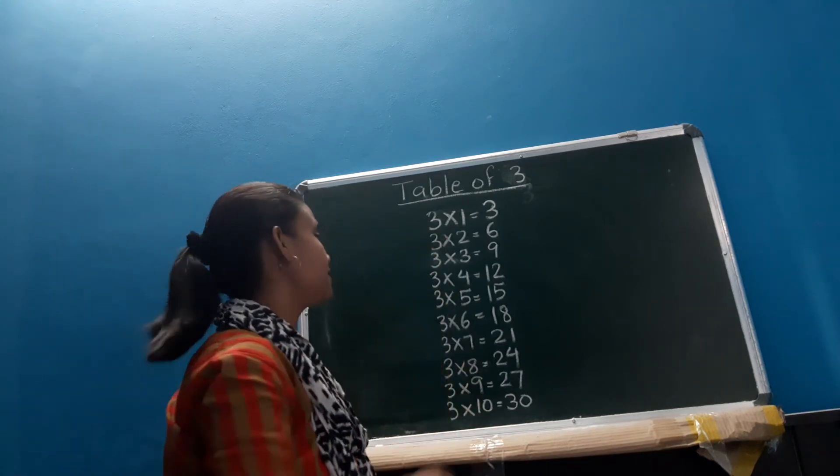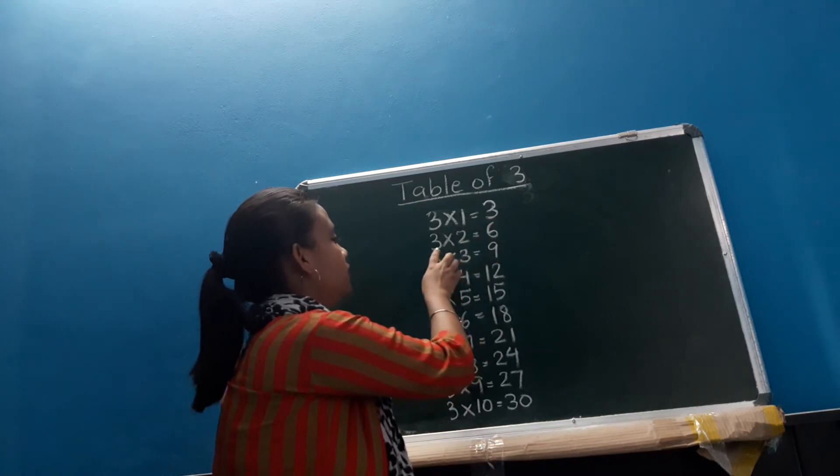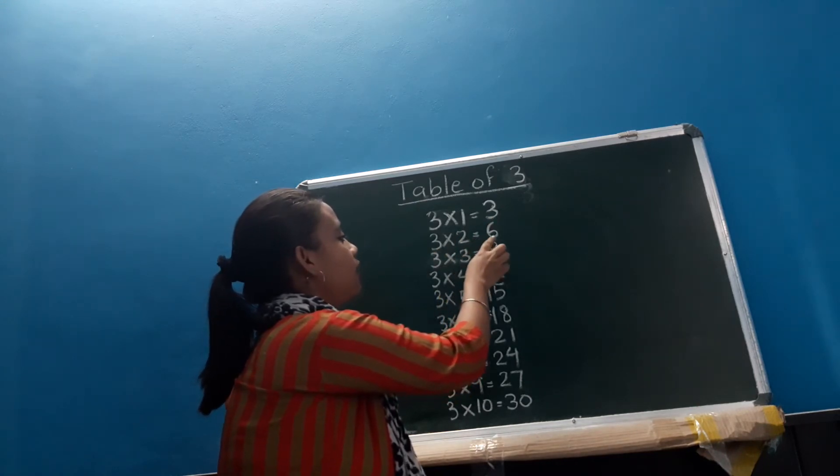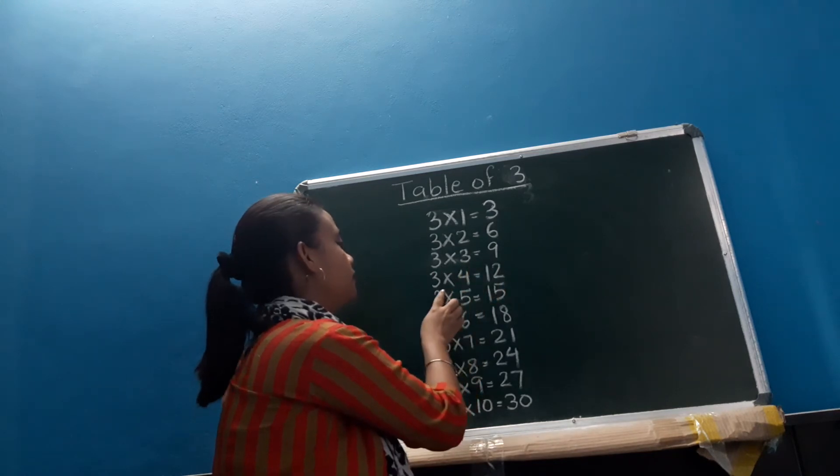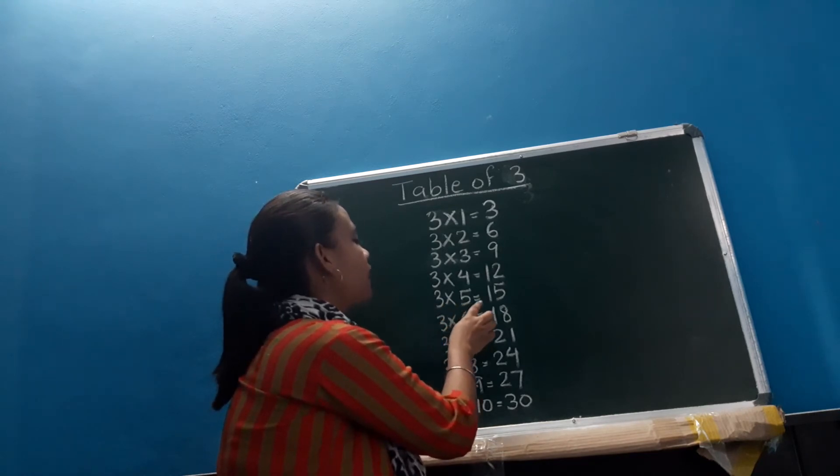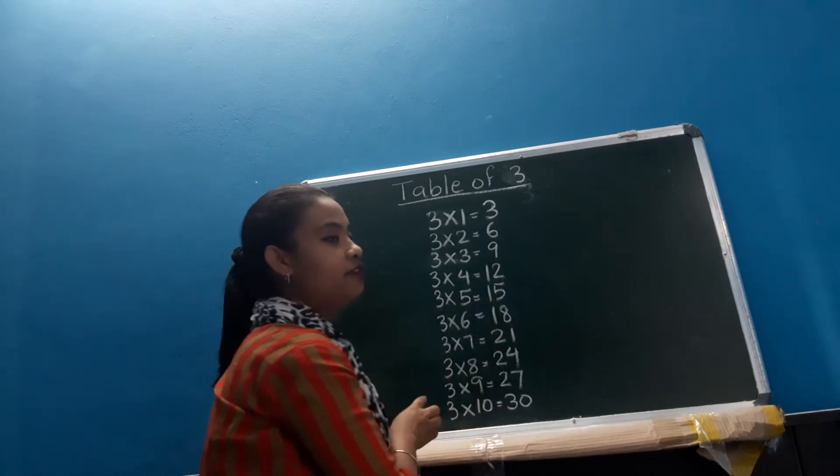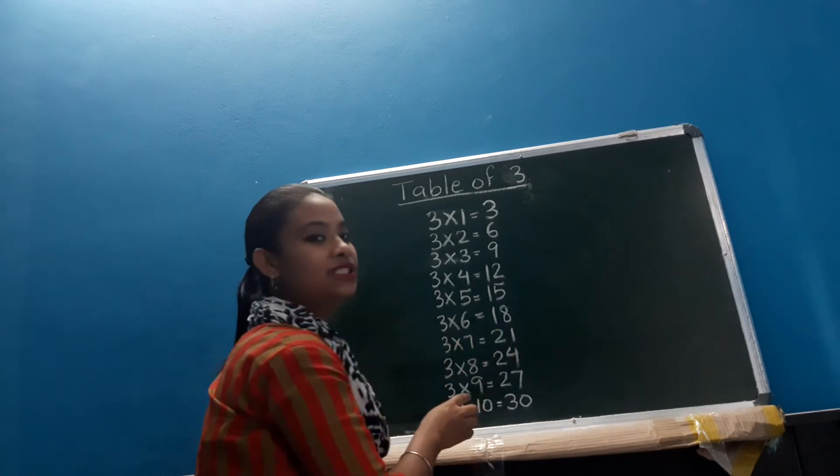Now let's begin, let's start again. 3 1's are 3, 3 2's are 6, 3 3's are 9, 3 4's are 12, 3 5's are 15.